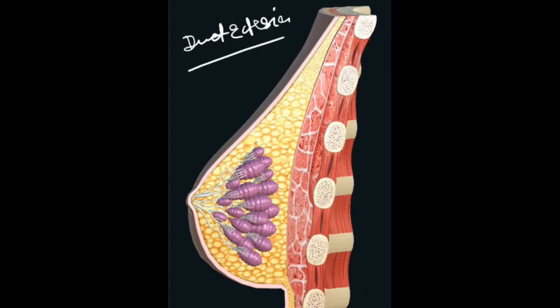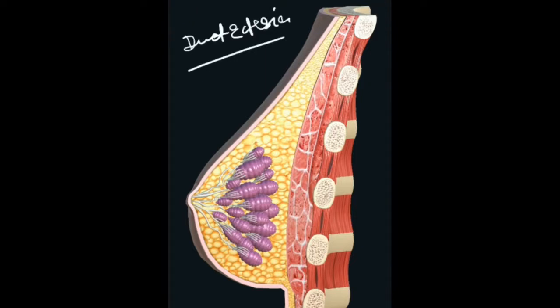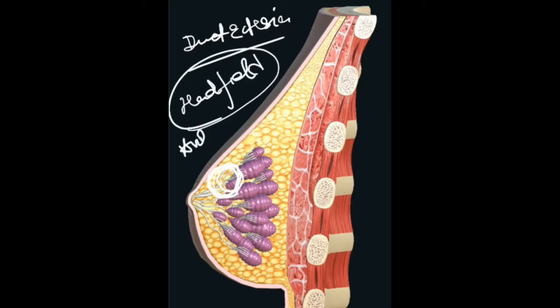Duct ectasia is an inflammatory condition of the lactiferous duct in which inflammation occurs due to stasis of secretions, causing colorful serous discharge — black, green, or paste-like discharge. The treatment of duct ectasia is the Hadfield operation, along with antibiotic treatment. In this condition, the lactiferous duct becomes inflamed because fluid cannot pass through the duct, and it causes breast abscess formation.